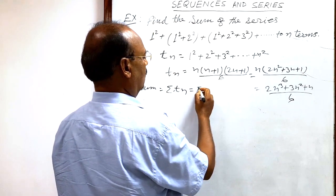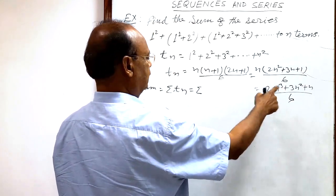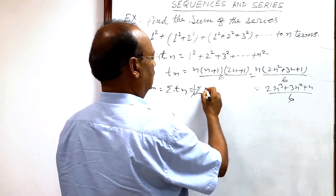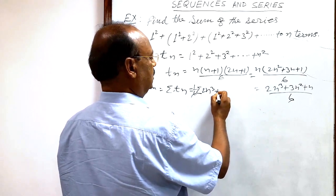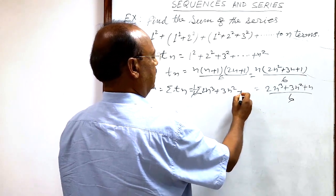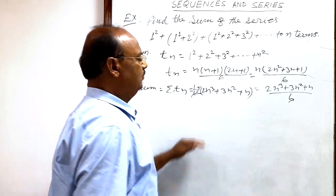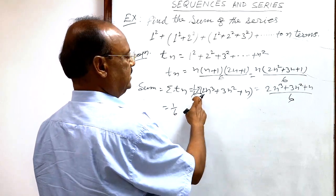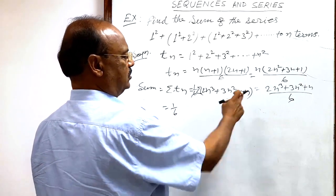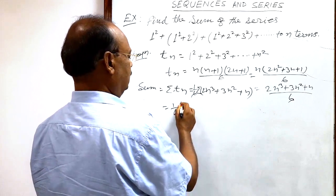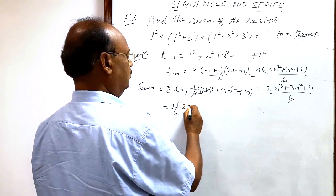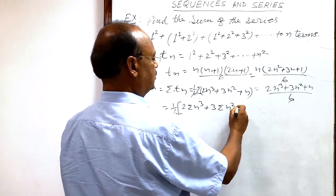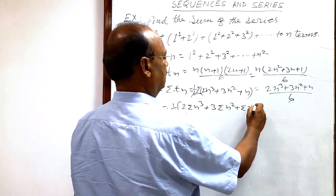So sigma tn is the sigma of this expression. We can take 1/6 outside the sigma notation. Distributing sigma over all terms, this becomes (1/6) times (2·sigma n³ + 3·sigma n² + sigma n).